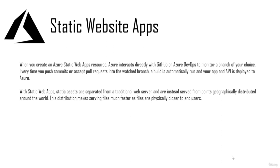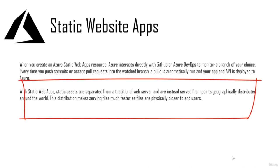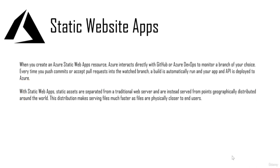So every time you push a commit or accept a pull request into the watched branch, the build is automatically run and your apps and APIs are directly deployed to Azure. The second reason why static web app trumps the storage account static website is that your static website is distributed across the globe, whereas a storage account static website is located within a particular region. If you're on the other side of the globe and want to access it, there is latency.